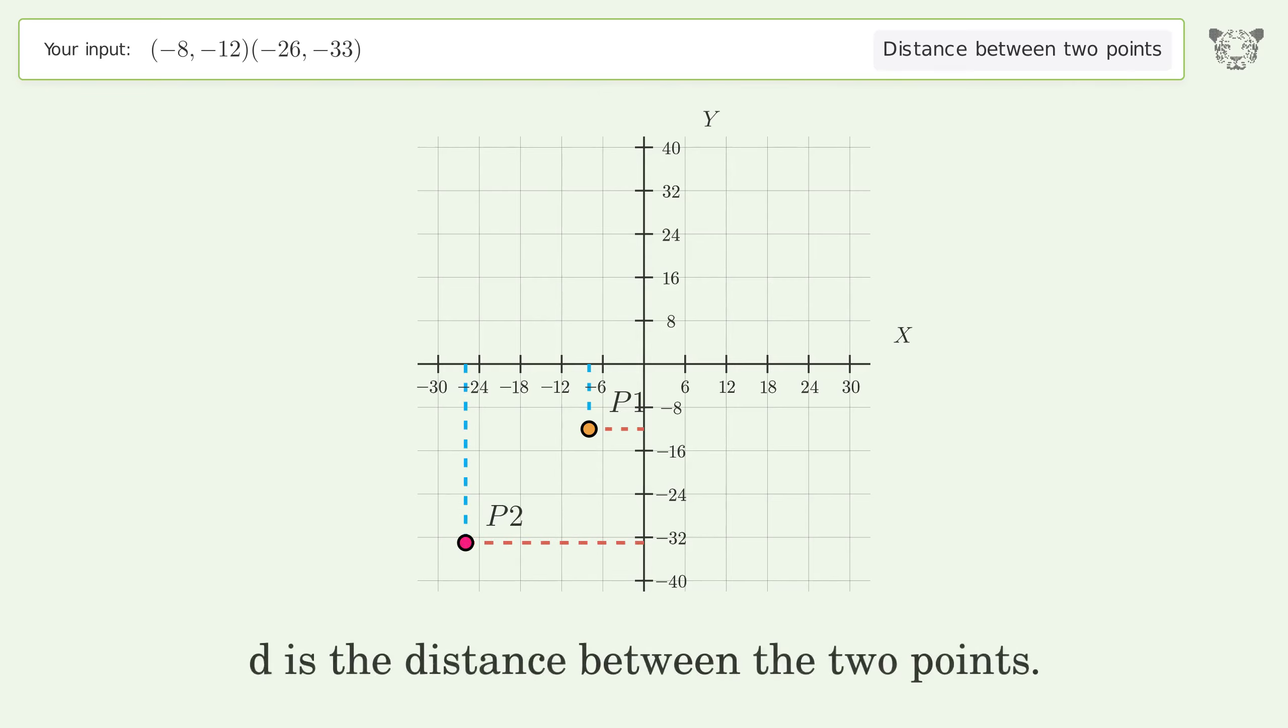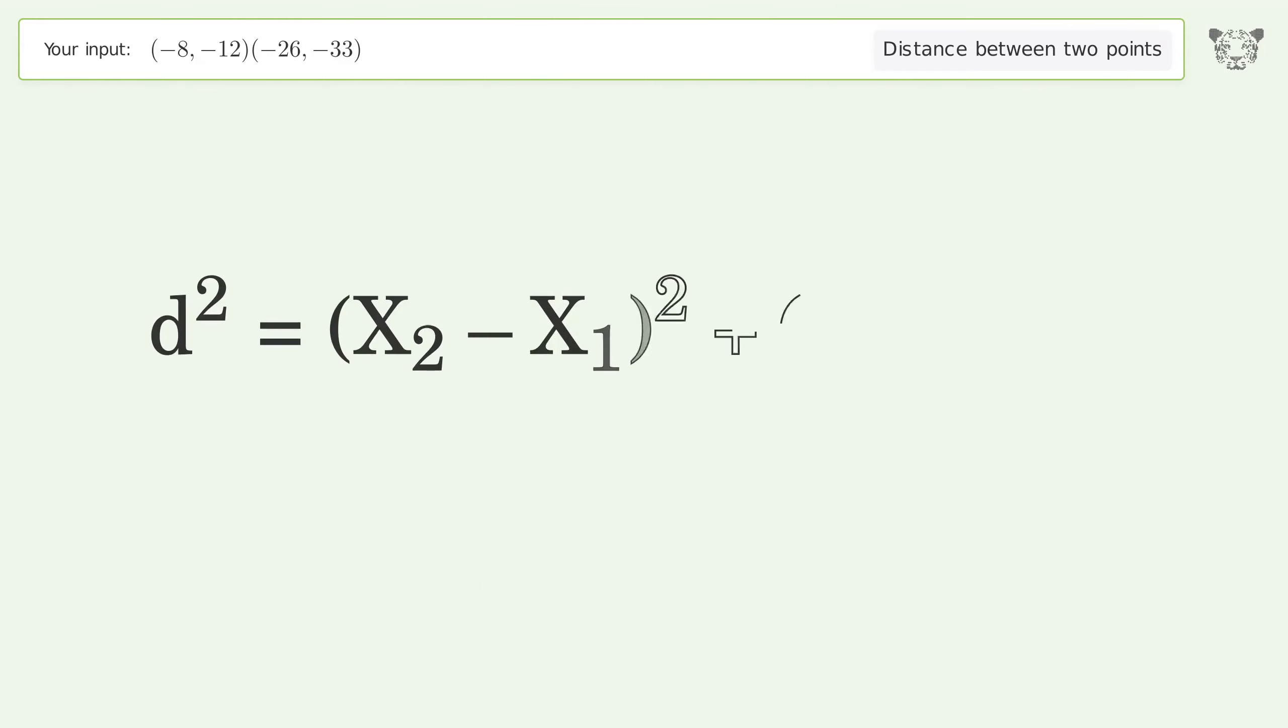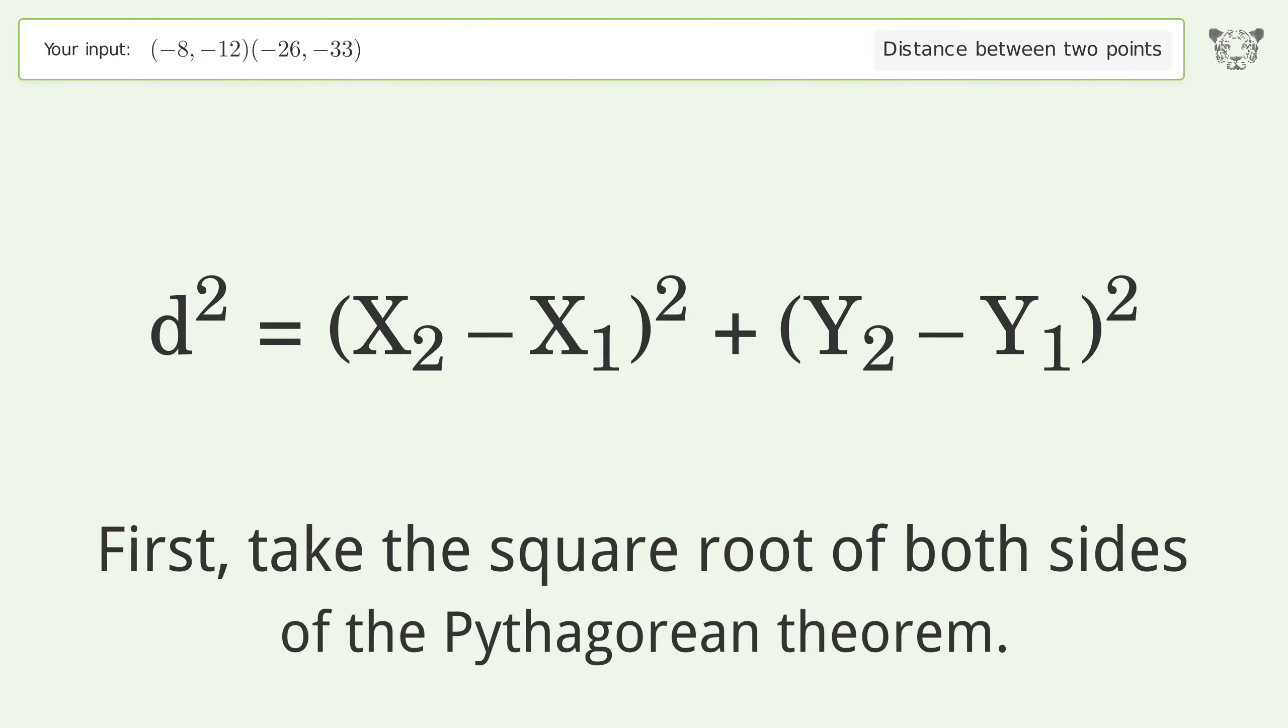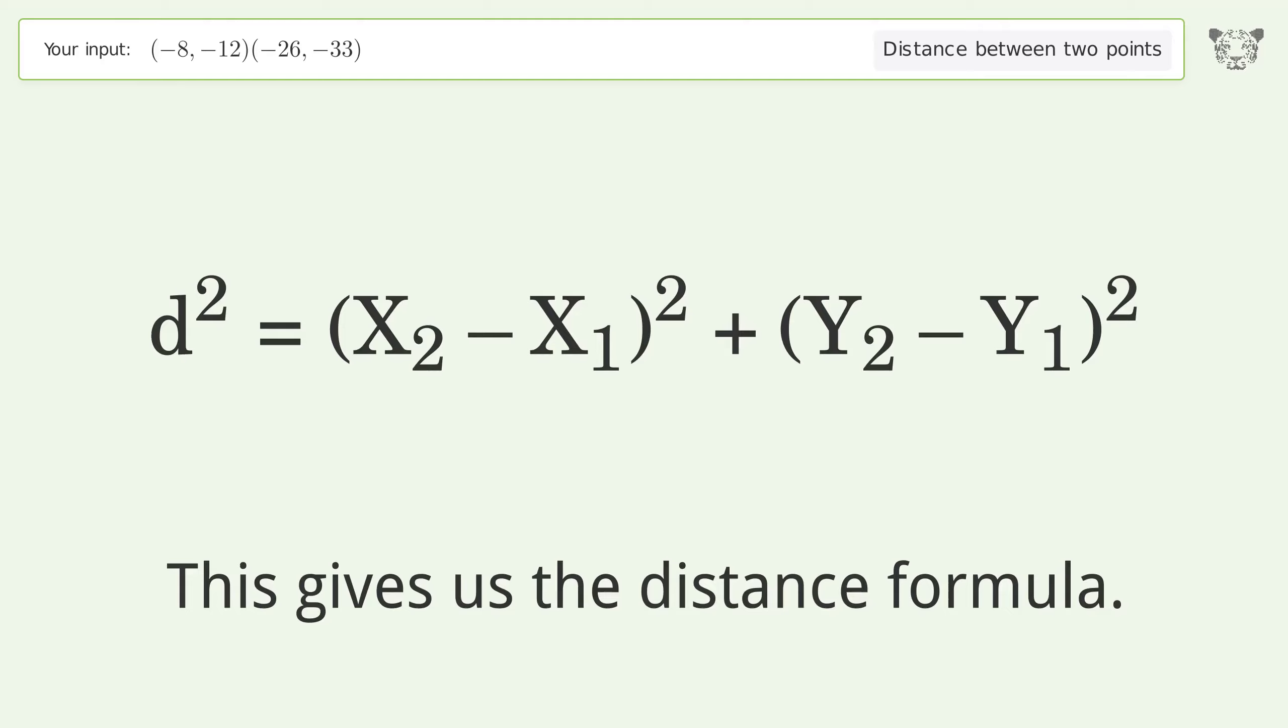d is the distance between the two points. First, take the square root of both sides of the Pythagorean theorem. This gives us the distance formula.